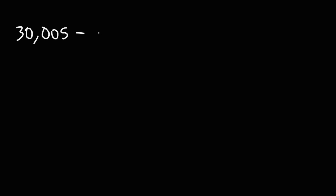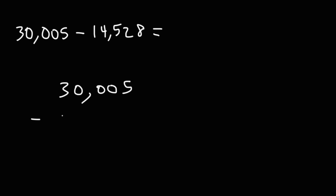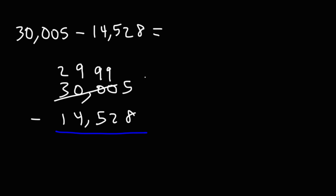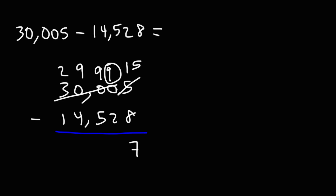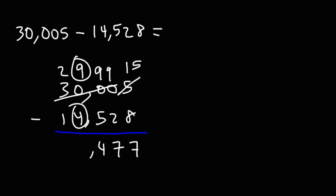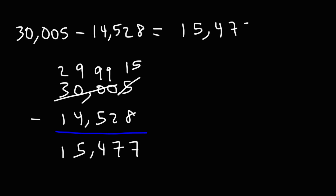Now for the next problem, we're going to have a number with three zeros: 30,005 minus 14,528. 5 minus 8 will give us negative 3, so we need to borrow a 1. This time, we're going to borrow a 1 from 3,000. 3,000 minus 1 is 2,999. We put the 1 on the 5, making it 15. 15 minus 8 is 7, 9 minus 2 is 7, 9 minus 5 is 4, 9 minus 4 is 5, and 2 minus 1 is 1. So the answer is 15,477.